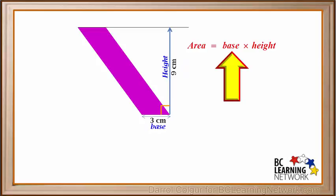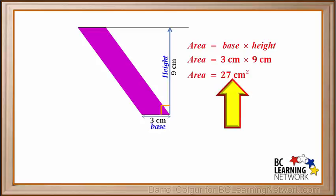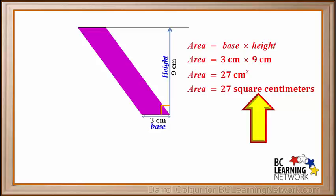To calculate the area, we use the formula area equals base times height, which is 3 cm times 9 cm. Multiplying 3 cm times 9 cm gives us 27 cm squared, or 27 square centimeters. So the area of this parallelogram is 27 square centimeters.